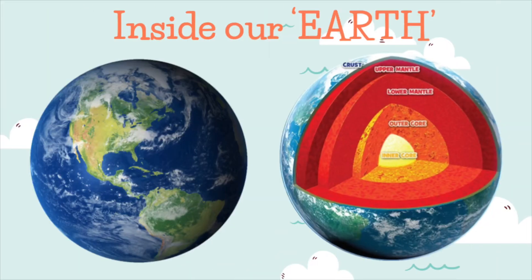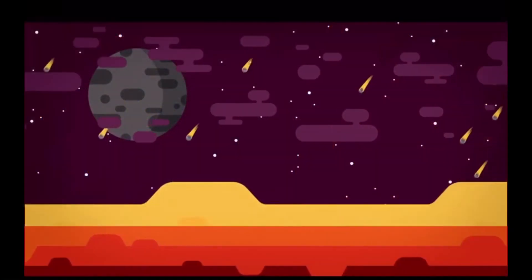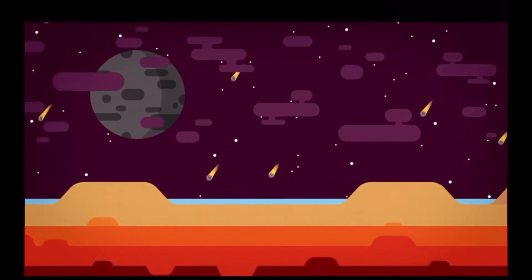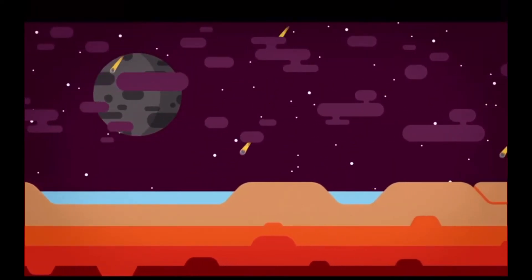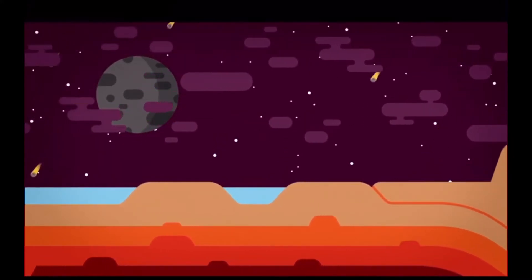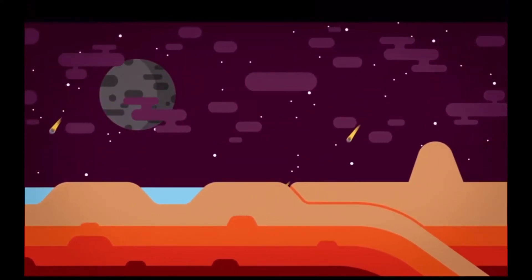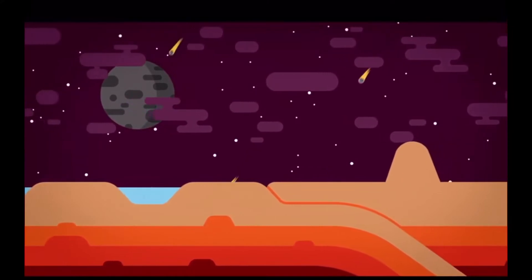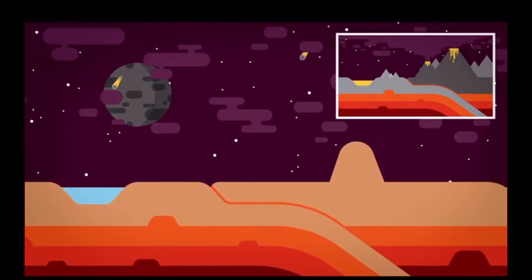Like its fellow terrestrial planets, Earth has a central core, a rocky mantle, and a solid crust. After the Earth cooled down and formed the crust, the hot rock inside continued to swirl about, moving the crust from below and breaking it apart. This process is called plate tectonics, and it is still happening right now.